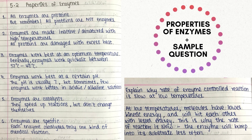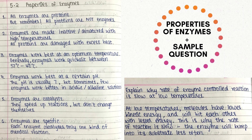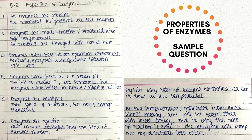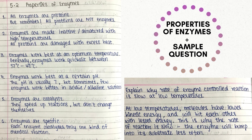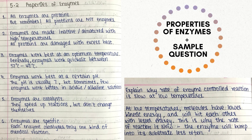All enzymes must end with the suffix '-ase'. There are carbohydrate enzymes, protein enzymes (proteases) and lipases. An example of a carbohydrate enzyme is amylase, maltase and sucrase. Proteases break down proteins and lipases break down fats. Remember that an enzyme's shape lets it catalyze a reaction.